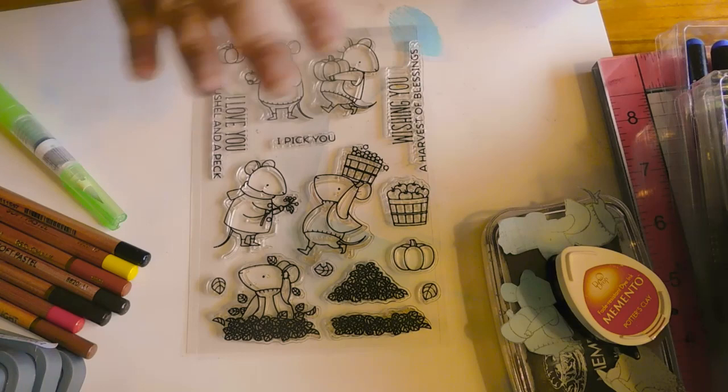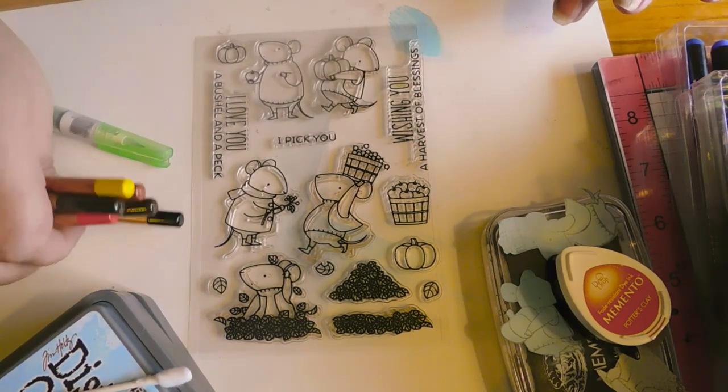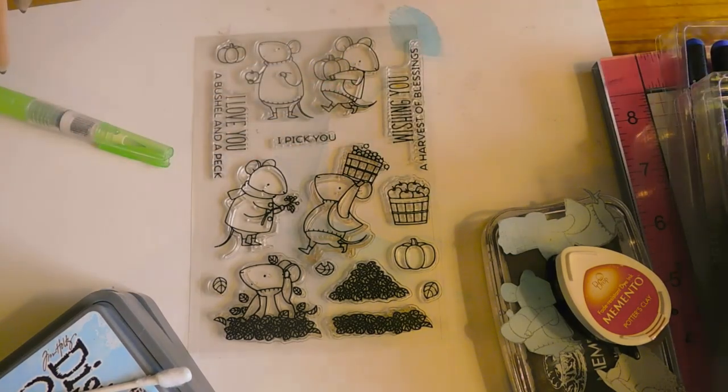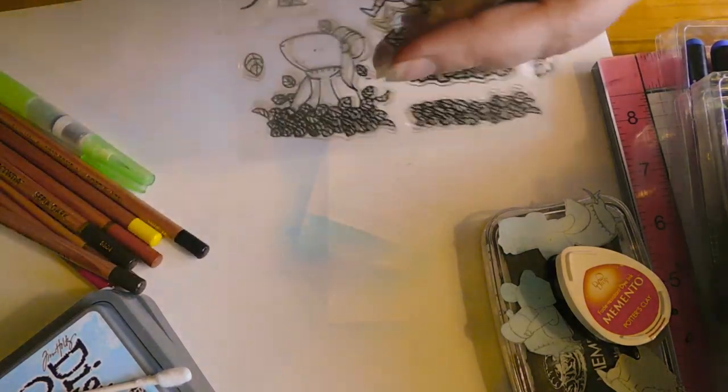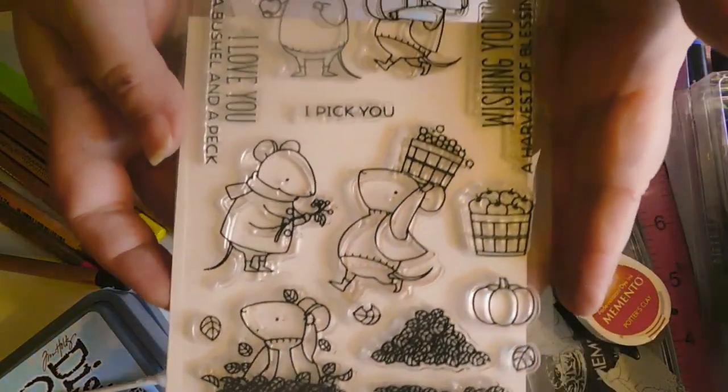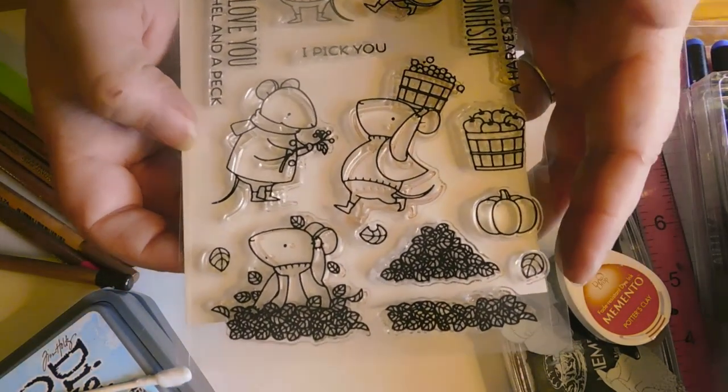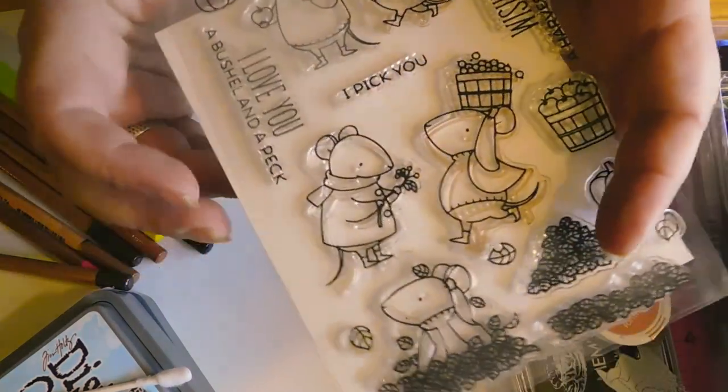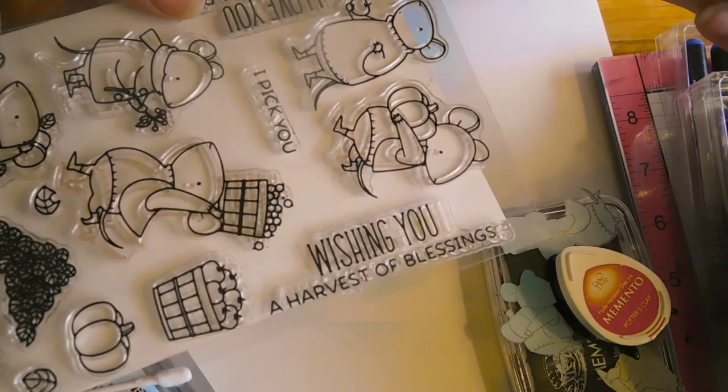Mixed media is just simply using different types of media in one project, and we're going to be going from some different inks to chalk pastels to watercolor pens. So there's the little mouse set. This little mouse set for fall is the one I'm going to be using. It has I love you a bushel and a peck, I picked you, and the sentiment I used was the wishing you a harvest of blessings.